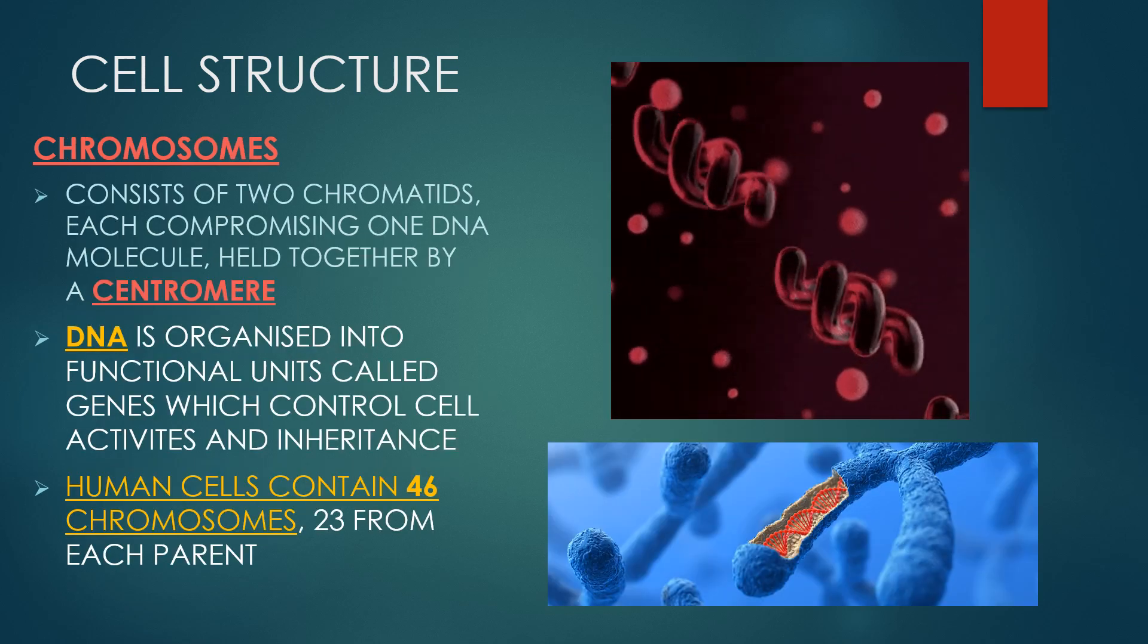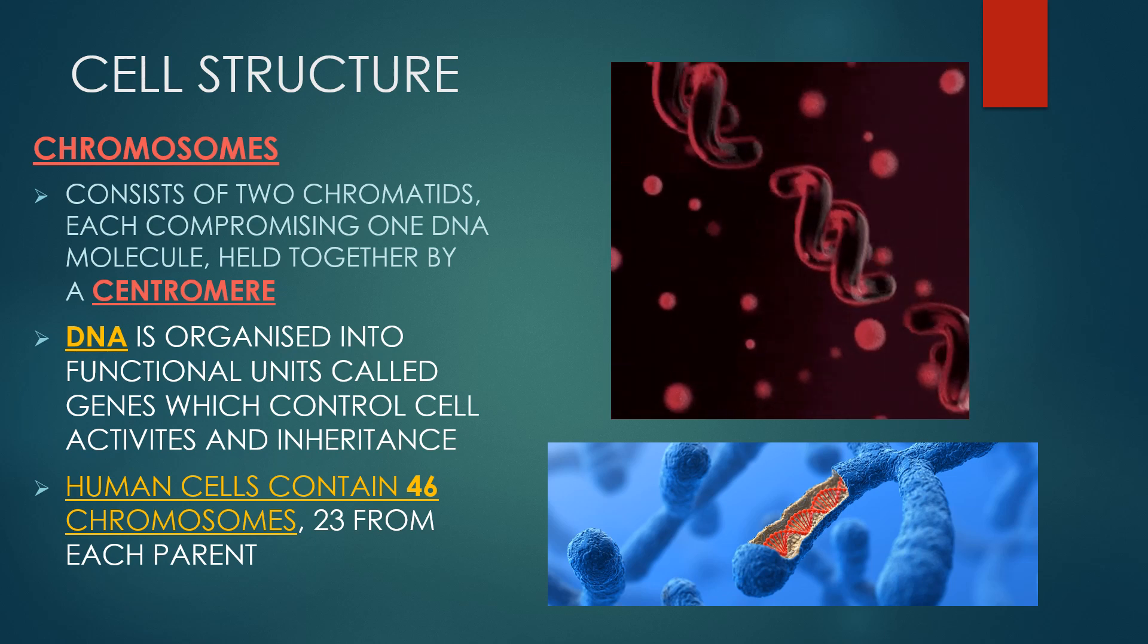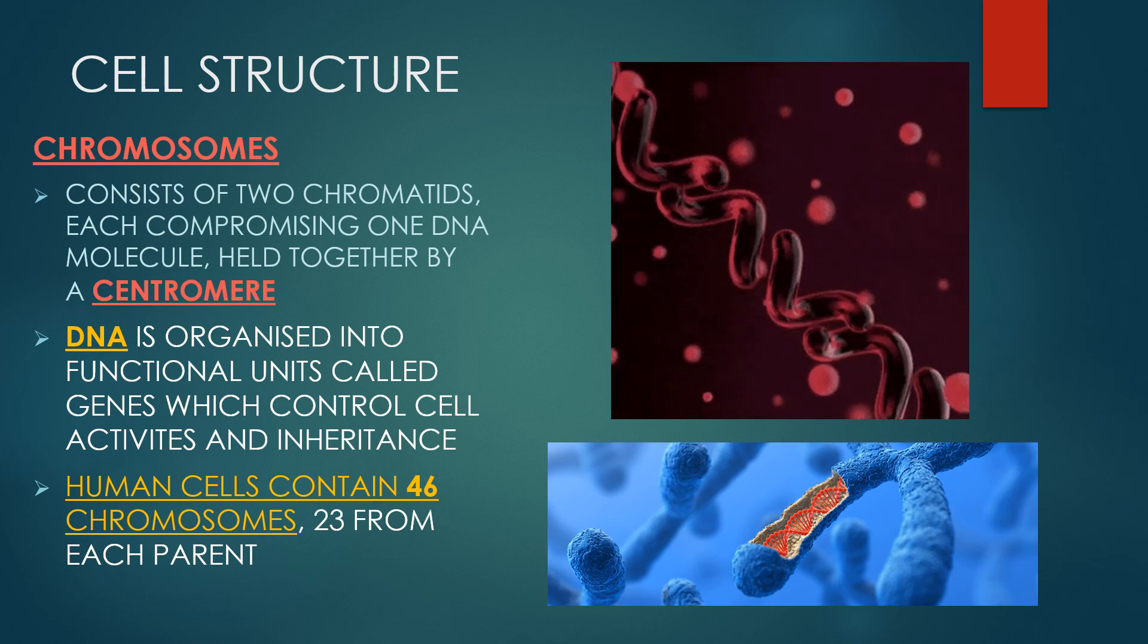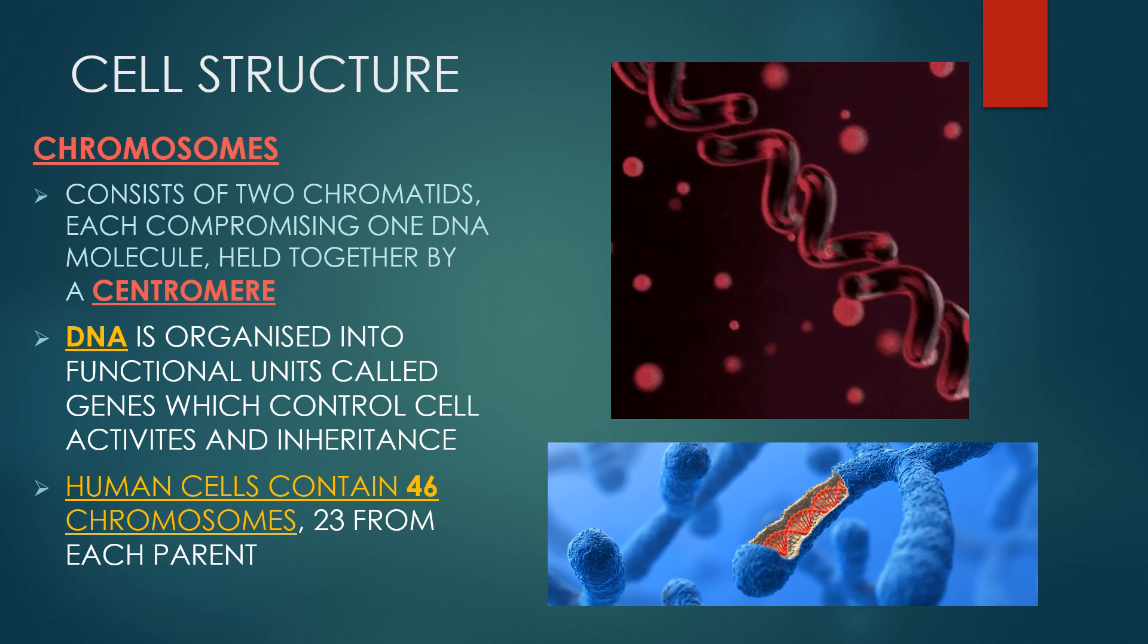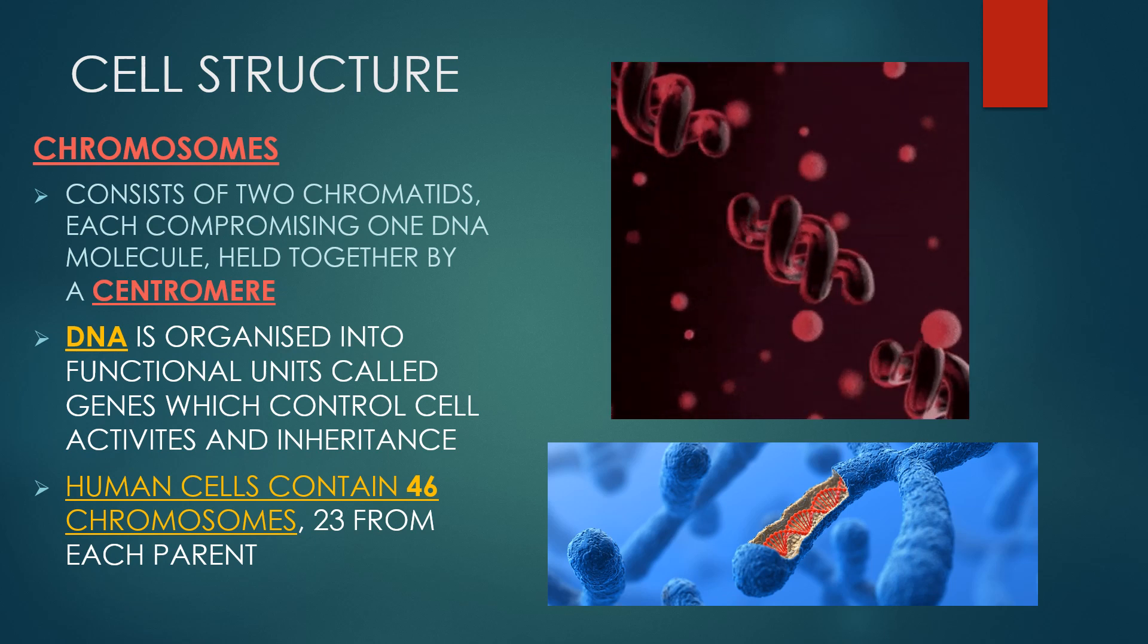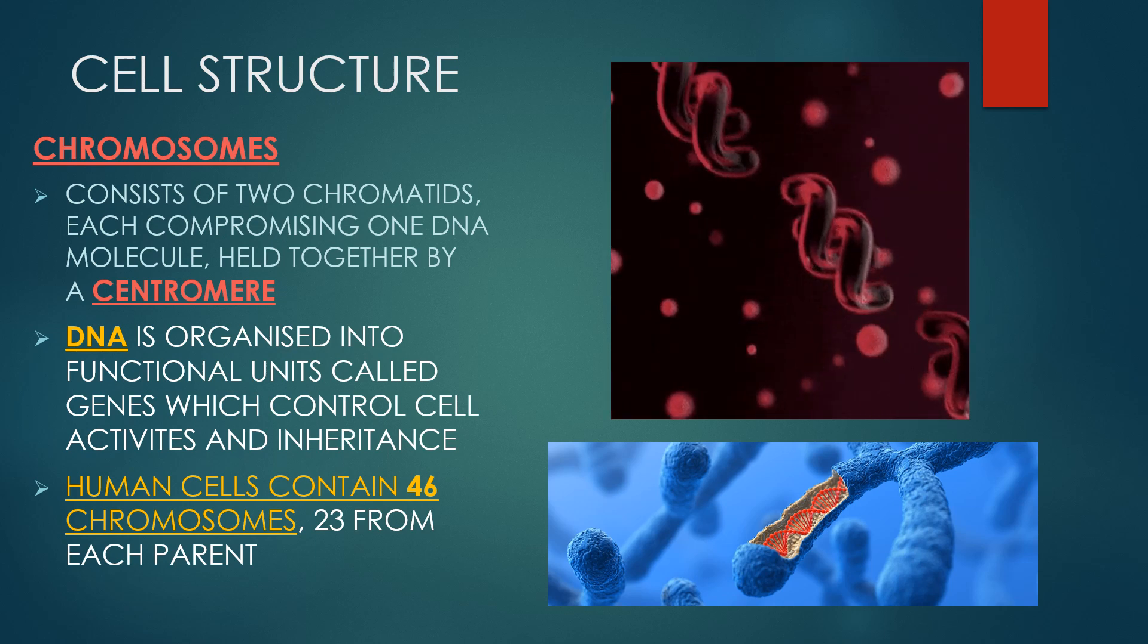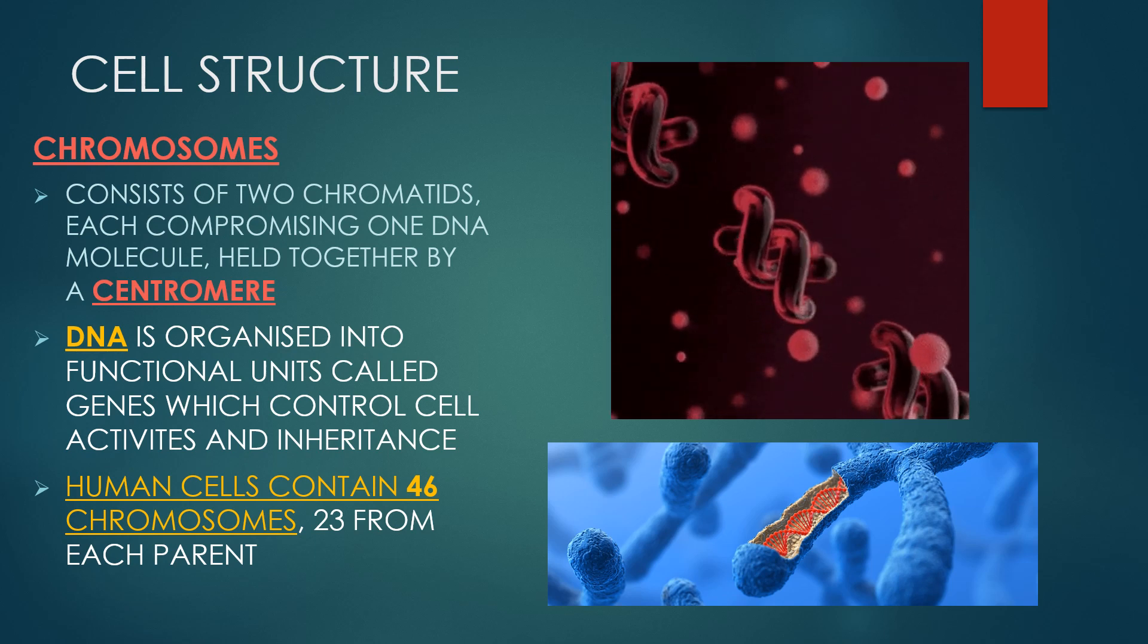The unique structure of chromosomes keeps DNA tightly wrapped around spool-like proteins called histones. Without such packaging, DNA molecules would be too long to fit inside cells. They carry the basic genetic material DNA which is responsible to provide hereditary characteristics and genetic information to various cells. The cellular functions are important for the growth and survival of living organisms. DNA is organized into functional units called genes which control cell activities and inheritance. Human cells contain 46 chromosomes, 23 from each parent.